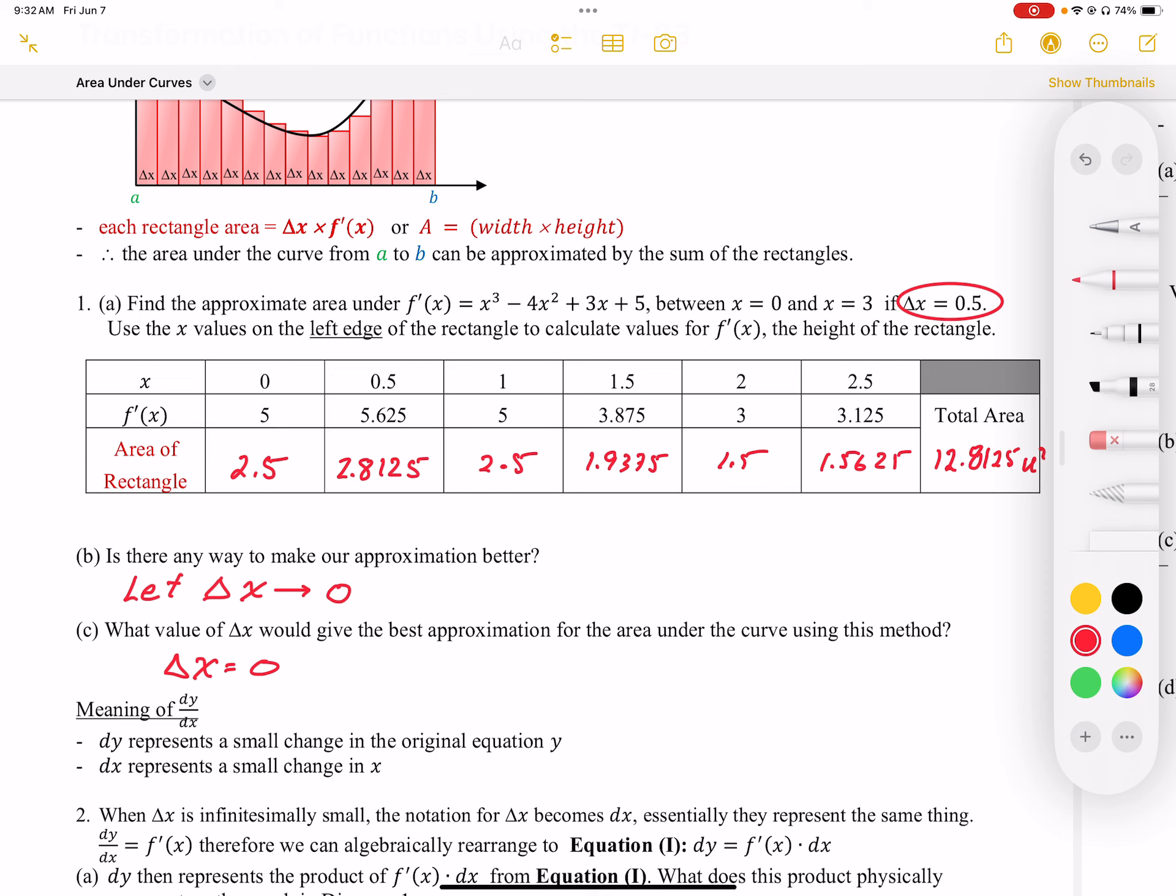We know we can't let that happen because if the width is 0, we'd have no area. So we're going to use a limit and let our delta x go to 0. With the limit, we're going to be able to figure out exact area. So we're going to let f(x) times delta x give us exact area.